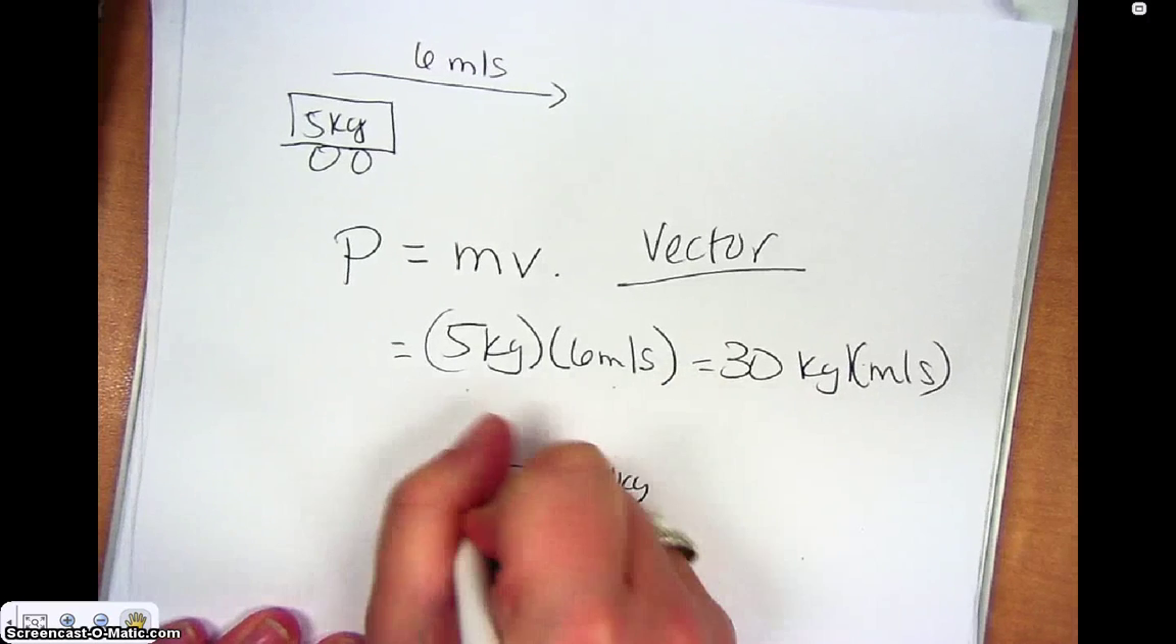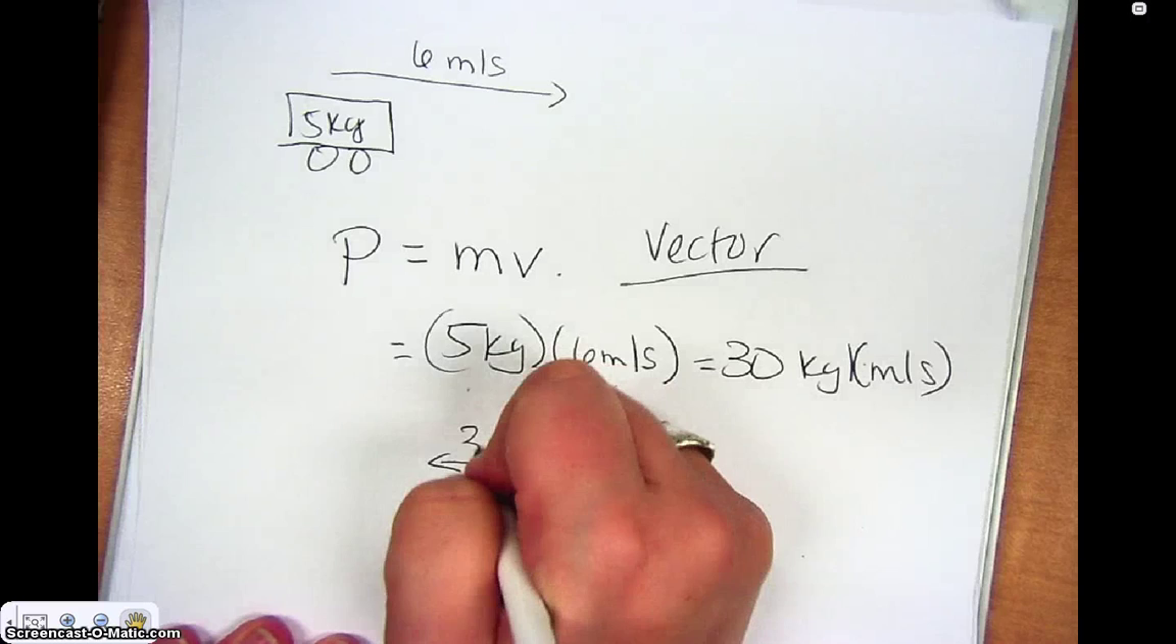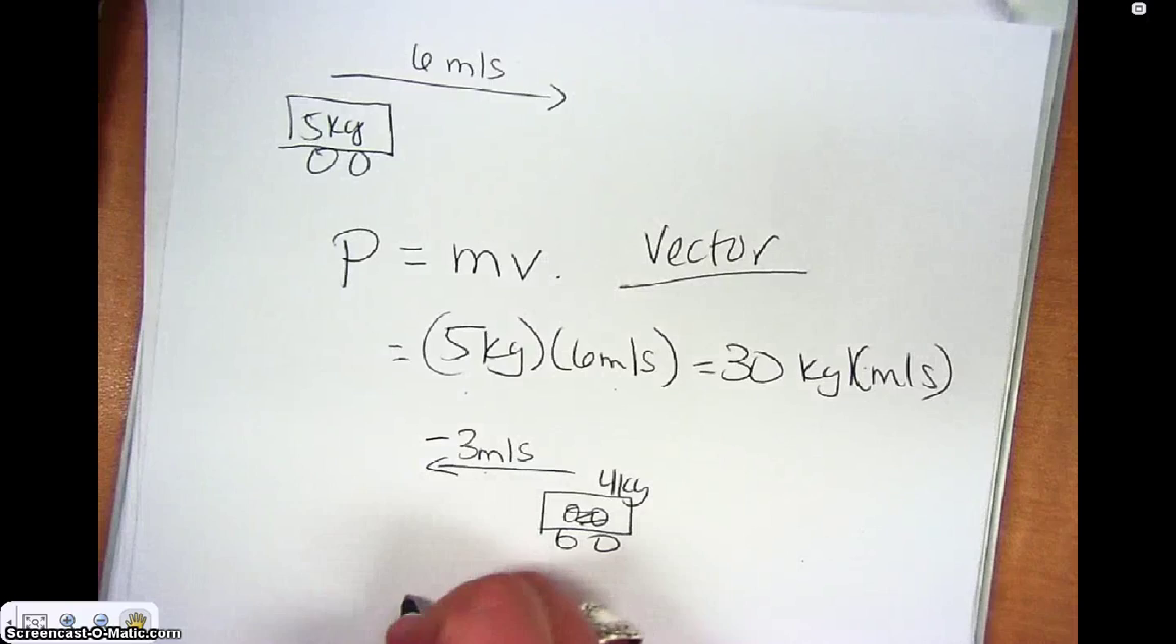If we had another example, let's say a different car that's four kilograms moving in this direction at three meters per second. Well, here in this case, three meters per second is actually to the left, and since I made six positive, I'm going to have to make this negative. So my momentum here is actually negative 12 kilograms times meters per second. Just keep in mind that momentum is a vector and it has a direction, and so it will be important to note that later when we do conservation of momentum.